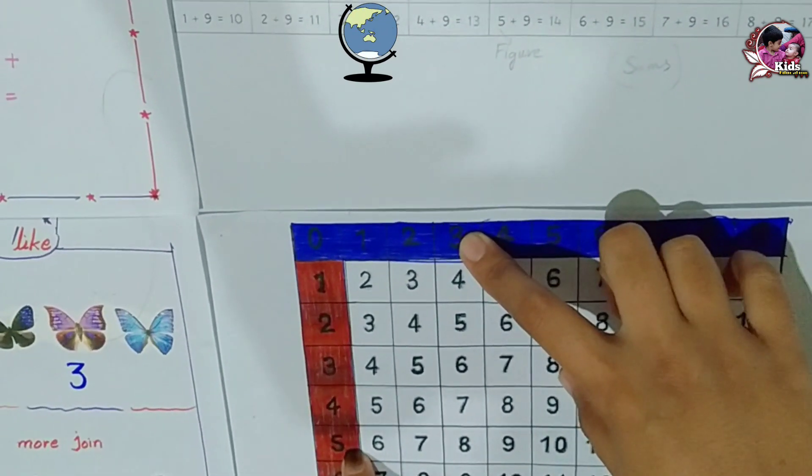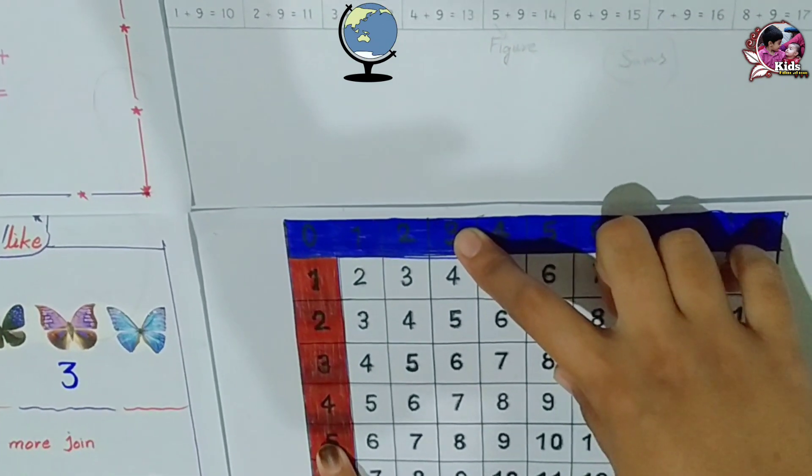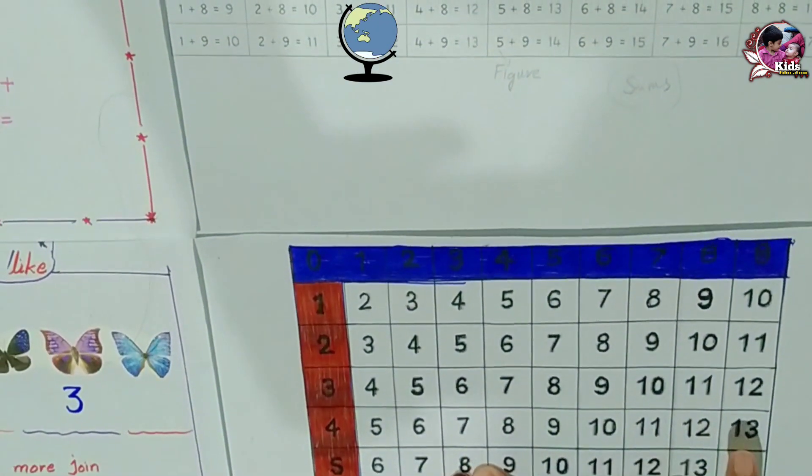Place one finger on the red 5 and another finger on the blue 3. And the answer is 8.